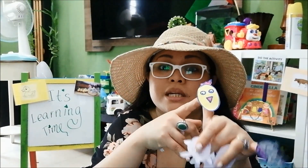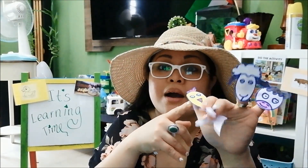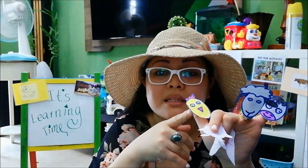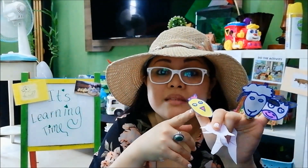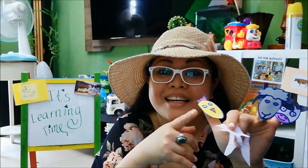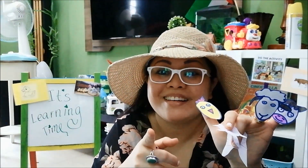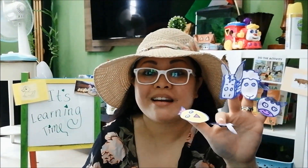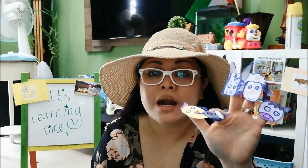Now we have chicken, cow, and a sheep. What do you think, what comes next? Sounds meh! It's a horse, right? It's a horse finger, horse finger, where are you? Here I am, here I am, how do you do?